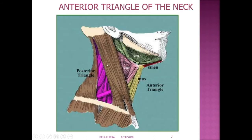So these are the two triangles. The trapezius muscle is behind and the sternocleidomastoid muscle divides the side of the neck into two triangles: the anterior triangle and the posterior triangle. The anterior triangle has its apex below and base above, formed by the lower border of the body of the mandible and a line extending from the angle of the mandible to the mastoid process. Below is the suprasternal notch of the manubrium, behind is the anterior border of the sternocleidomastoid muscle, and in front is the midline of the neck.